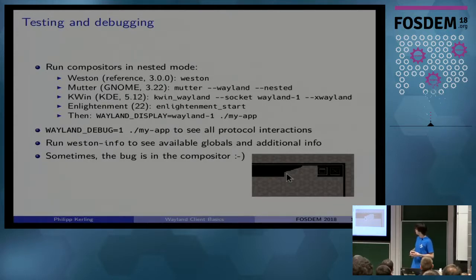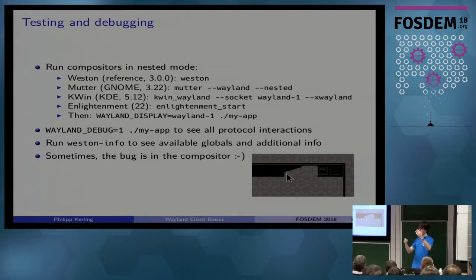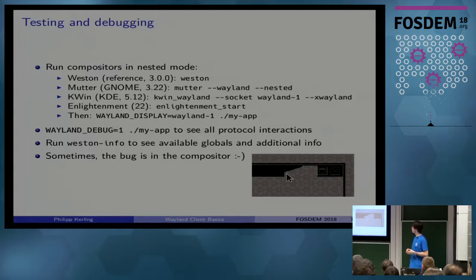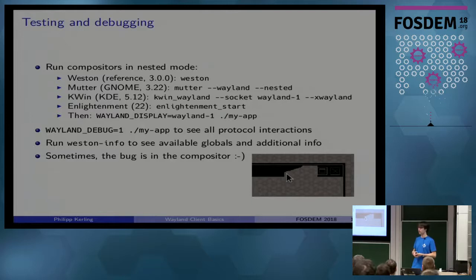Very useful is setting the environment variable WAYLAND_DEBUG=1 when starting your application — you'll get a trace of all API calls on the Wayland socket, which is very useful. You see everything you send to the server and everything the server sends back, and you can look for problems. If you want to see what globals and interfaces your compositor supports, you can use the weston-info executable, which is part of Weston. Even though it's called weston-info, you can use it with any compositor.